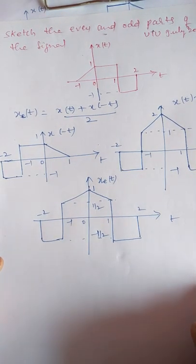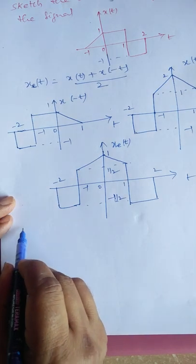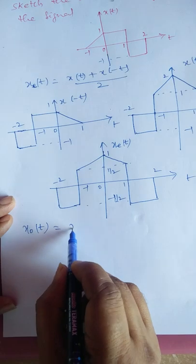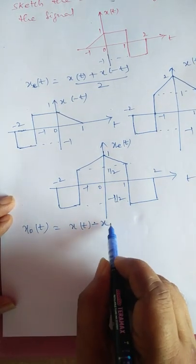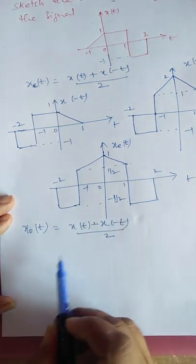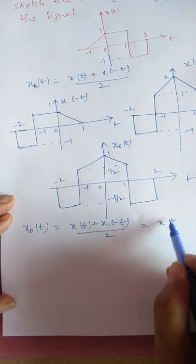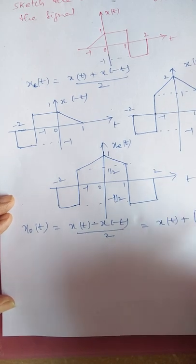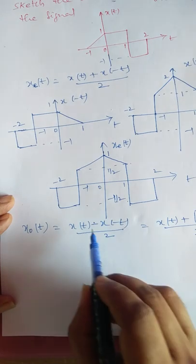Similarly, to get the odd component of this signal, the formula is xo(t) = [x(t) - x(-t)] / 2. We can rewrite this as x(t) + [-x(-t)], all divided by 2, since plus times minus becomes minus. We do this because we are familiar with addition of signals.